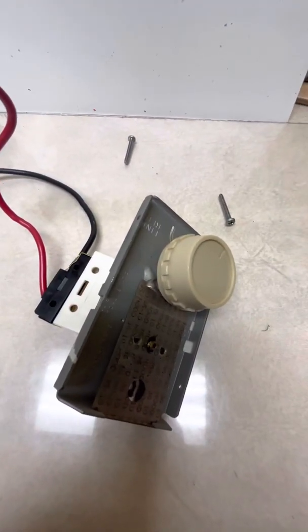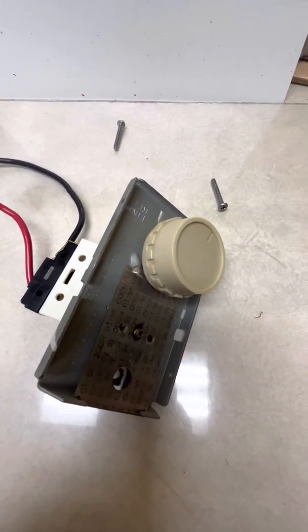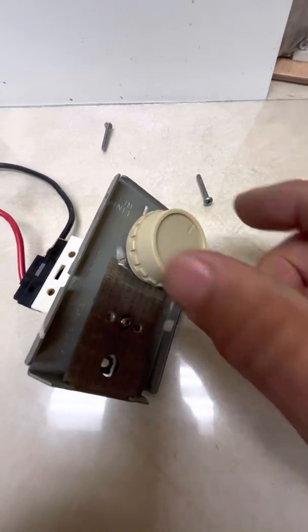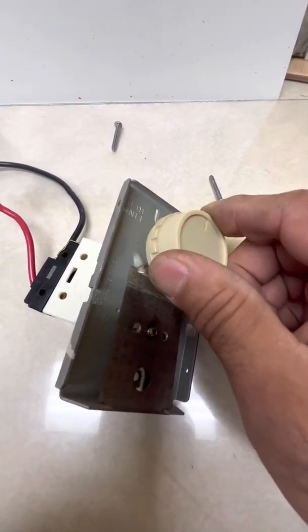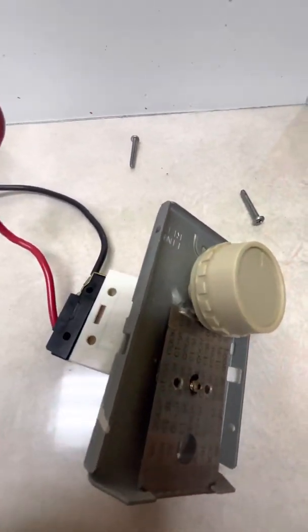This is an electric baseboard heater thermostat. Sometimes they stick and stay on all the time, no matter what you do with the setting. What you can do is, after you shut off the power and disconnect it from the wall,